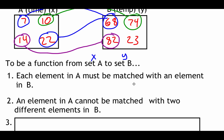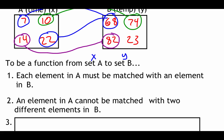The second characteristic says each element in A cannot be matched with two different elements in B. That wouldn't make sense: if you go outside at 7 o'clock, it's only going to be one temperature — you can't have two different temperatures at the same time. So each x can only be matched with one y value. Those first two things are what make a function a function.